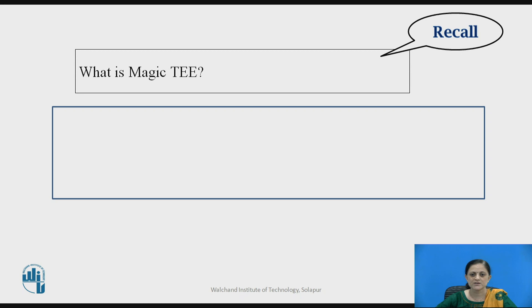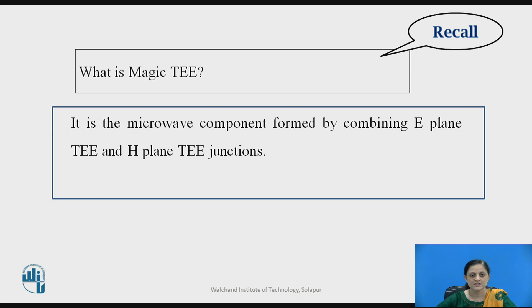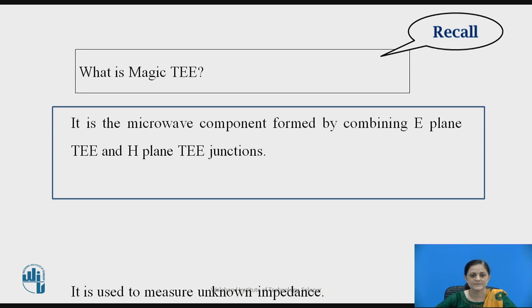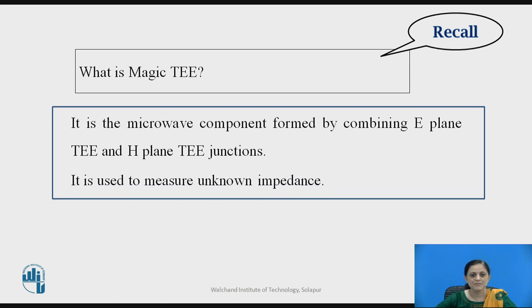Before starting today's session, recall what is a magic T. The magic T is one of the microwave components which can be formed by using two other components: the E-plane T and H-plane T. So, the combination of E-plane T and H-plane T forms a magic T junction. One of the applications of the magic T is used to measure the unknown impedance value.